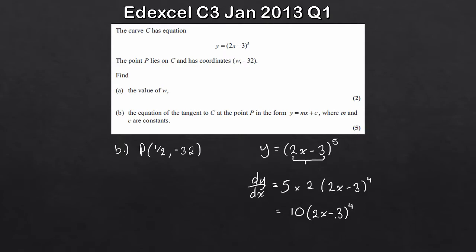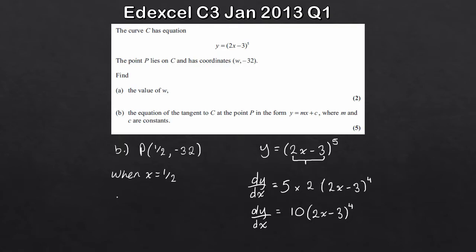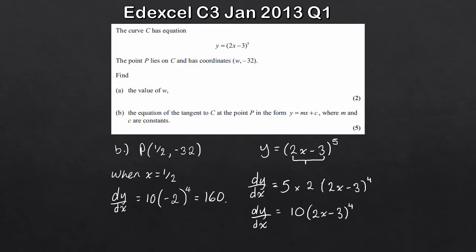That's dy/dx — our differential. But we need the equation of the tangent at point P. The differential allows us to find the gradient at a given point. With the x-coordinate of P equal to 1/2, we sub in: dy/dx = 10 × (2×(1/2) - 3)^4 = 10 × (1 - 3)^4 = 10 × (-2)^4 = 10 × 16 = 160. You can use your calculator for this — the gradient is 160.